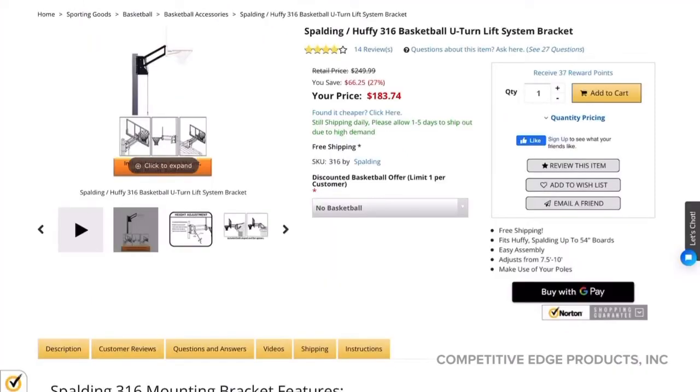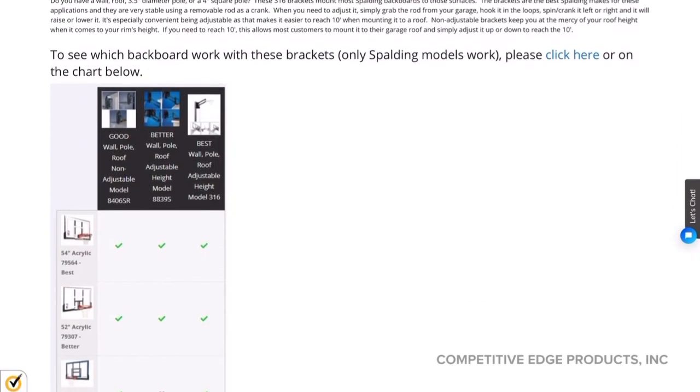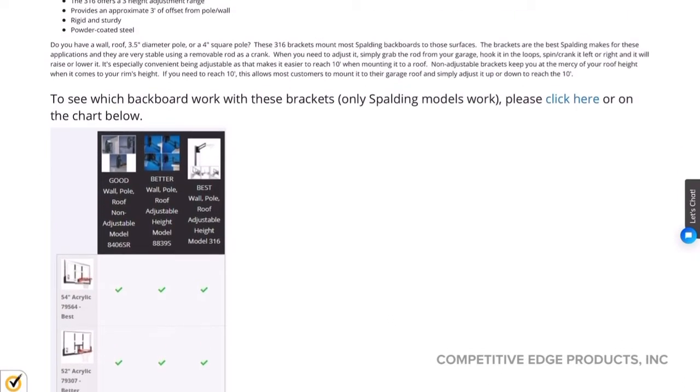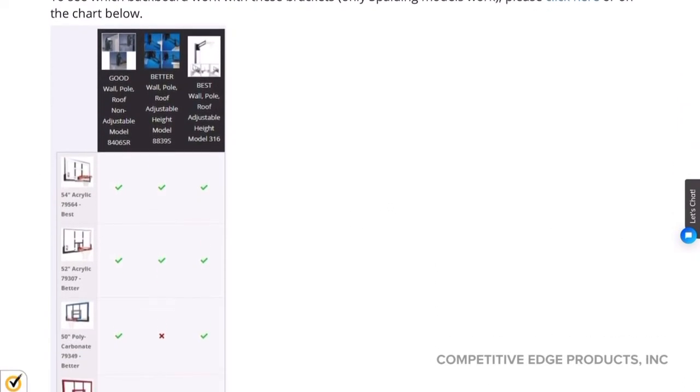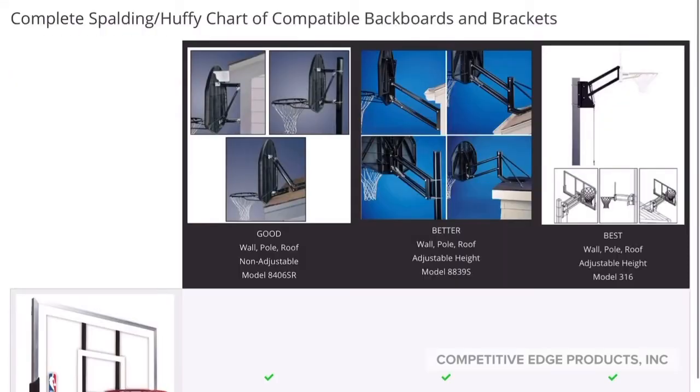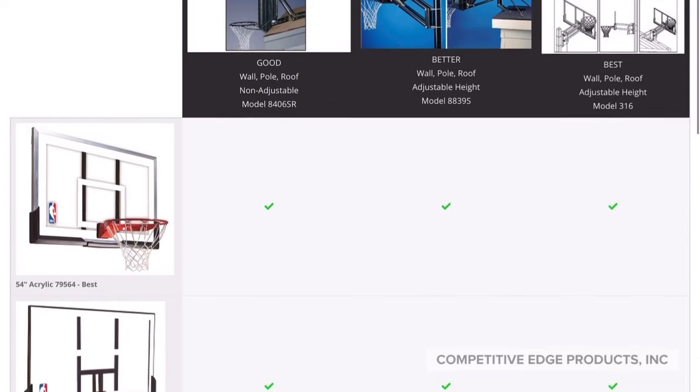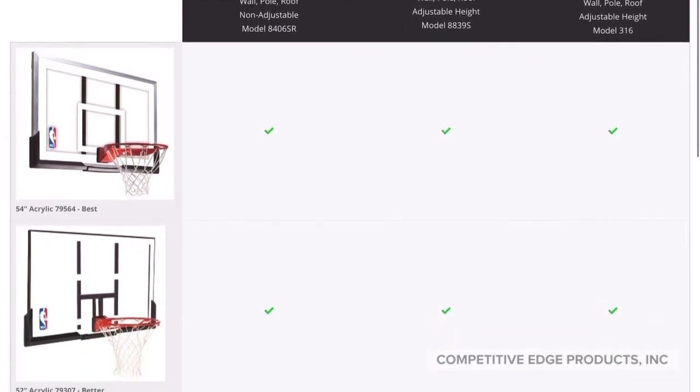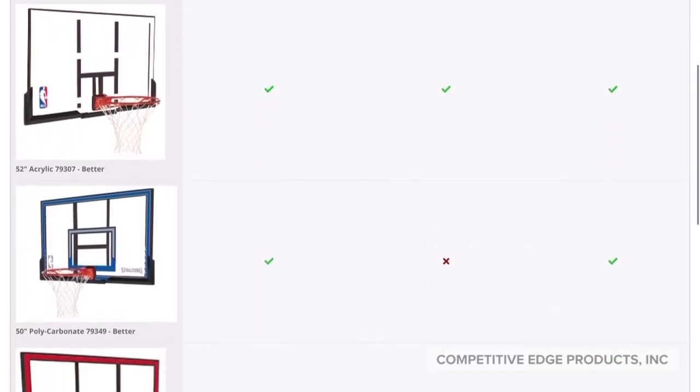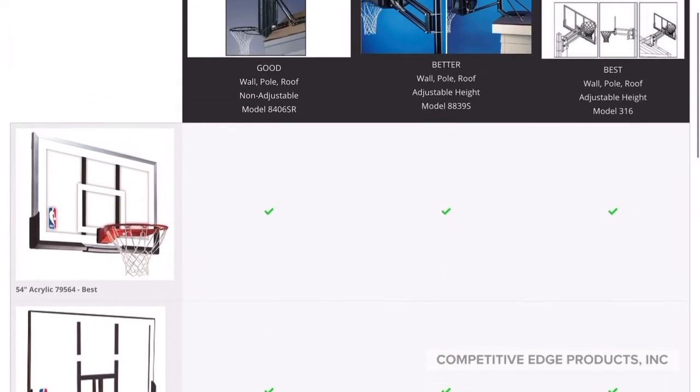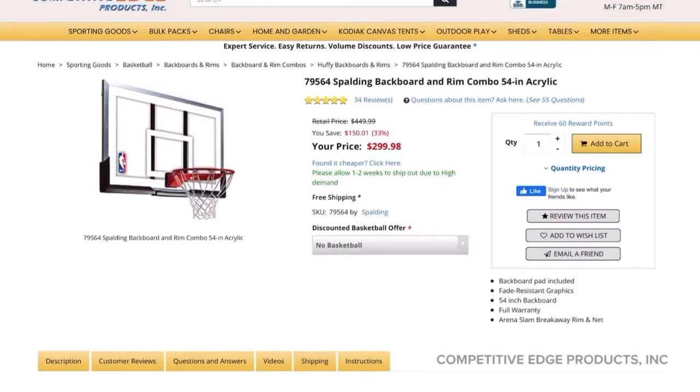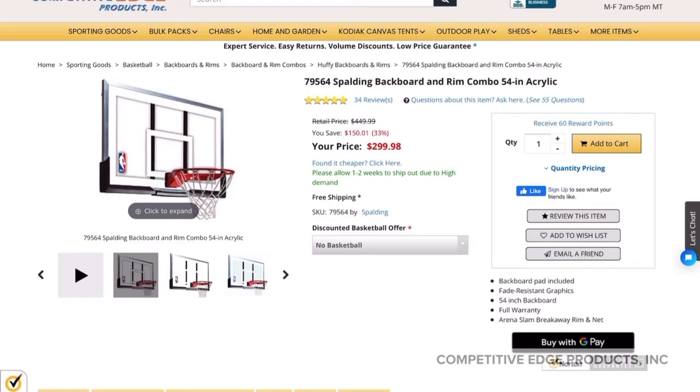Now if you've decided these brackets are for you, your next question is going to be what backboards work with these brackets. If you scroll down and click on this compatibility chart, it will show you the types of brackets available at the top, and then the column on the left shows the backboards that are available and whether or not they're compatible. With these particular brackets 316, the backboard in the upper left is the most popular. If you click on that, it will take you to that on our website.